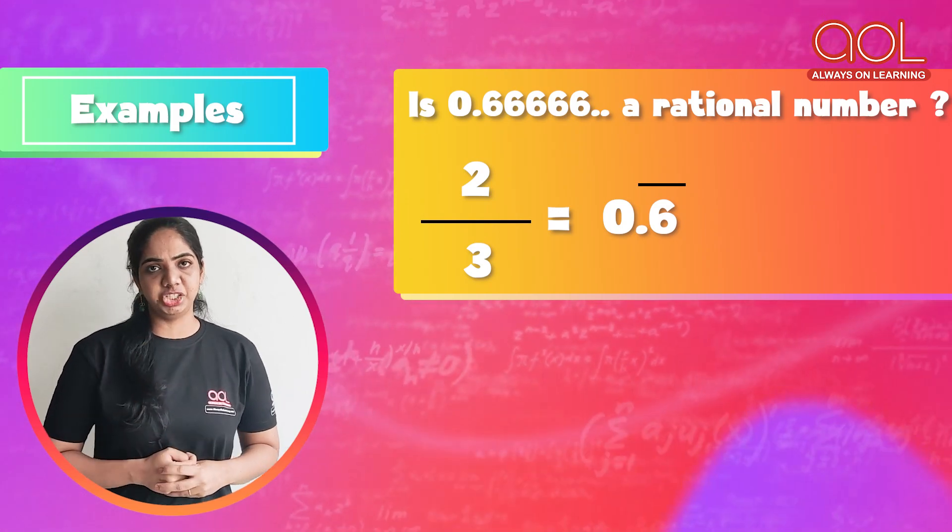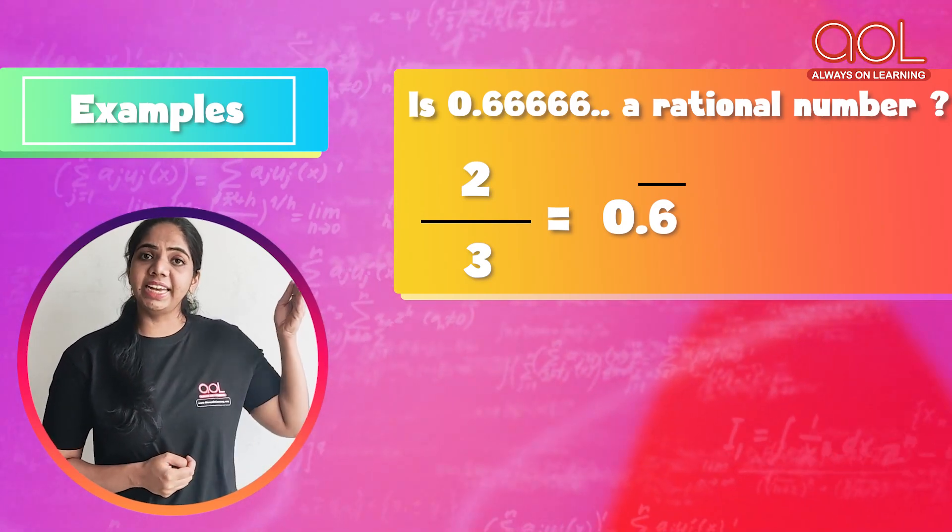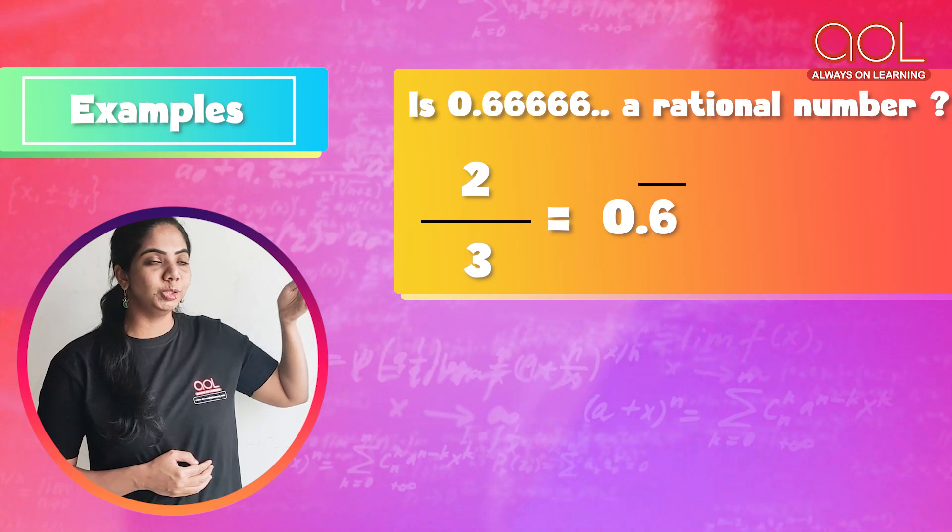You denote it as 0.6 and a small line on top of 6 to show that it is repeating. Yes, it is a rational number because it can be expressed in the form 2 by 3. So, I hope you understood what rational and irrational numbers are.